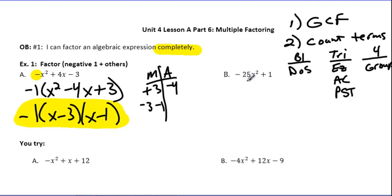Once again, we notice, first of all, there's no GCF. We count the number of terms, we have a binomial. So I'm thinking difference of squares. But again, I have a lead coefficient that's negative, right there. So I'm going to take care of that first by taking a negative one out. That's going to give me -1(25x² - 1).